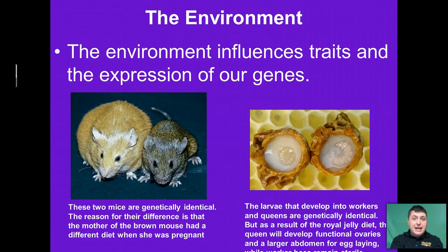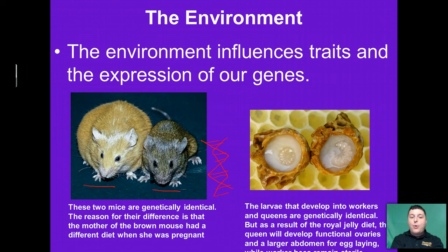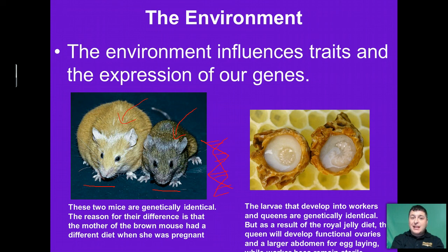The last element that leads to an alternate pattern of inheritance is the environment. The environment influences our traits and the expression of our genes. For example, these two mice are actually genetically identical — if we were to look at their DNA, it would be the same. The only difference is the nutrition the mother received during pregnancy. The brown mouse's mother had a much more nutritious diet, rich in folic acid, and those prenatal nutrients helped with the expression of the genes in the offspring, leading to a healthier baby. The regular diet the yellow mouse's mother received led to less healthy gene expression.